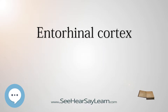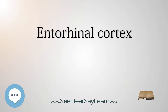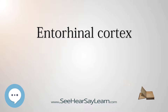The entorhinal cortex, EC — ento meaning interior, rhino meaning nose, entorhinal meaning interior to the rhinal sulcus — is an area of the brain located in the medial temporal lobe and functioning as a hub in a widespread network for memory and navigation.